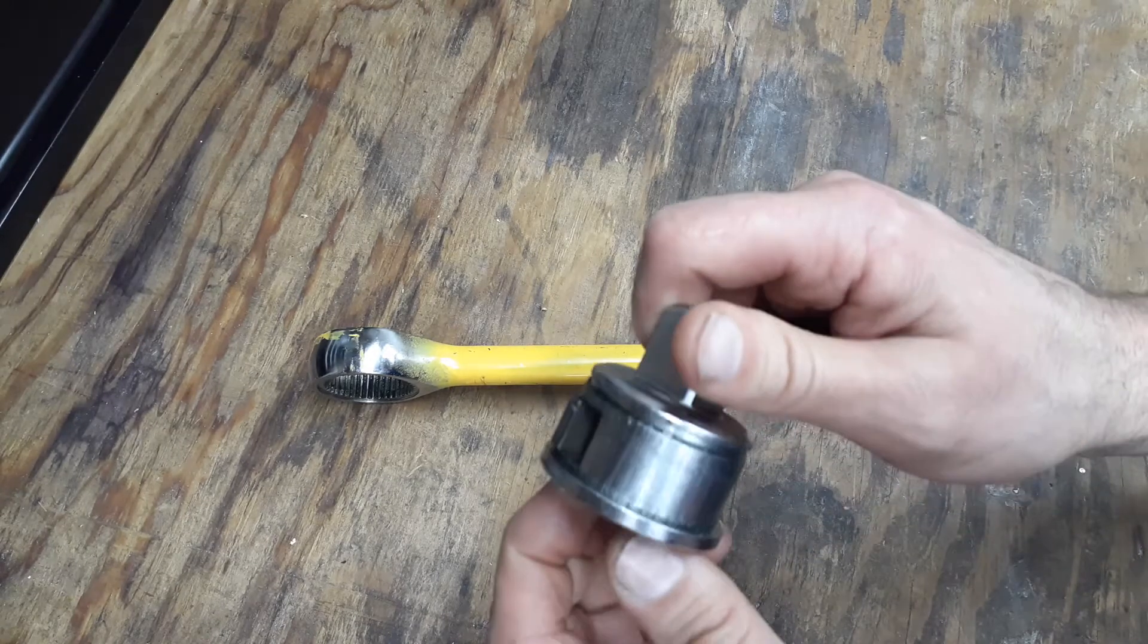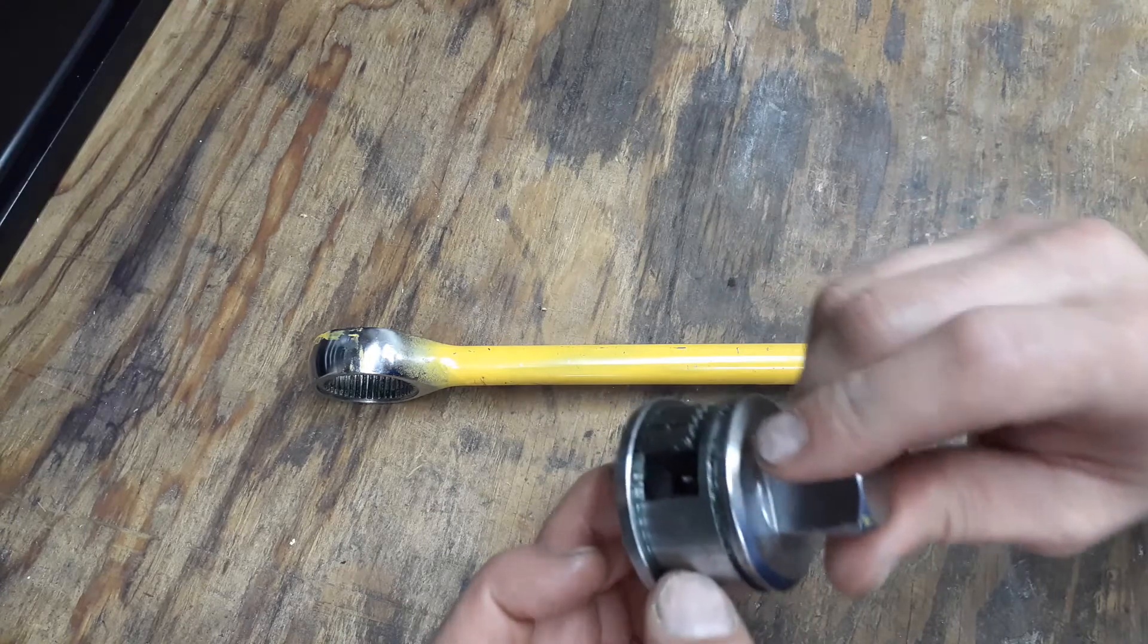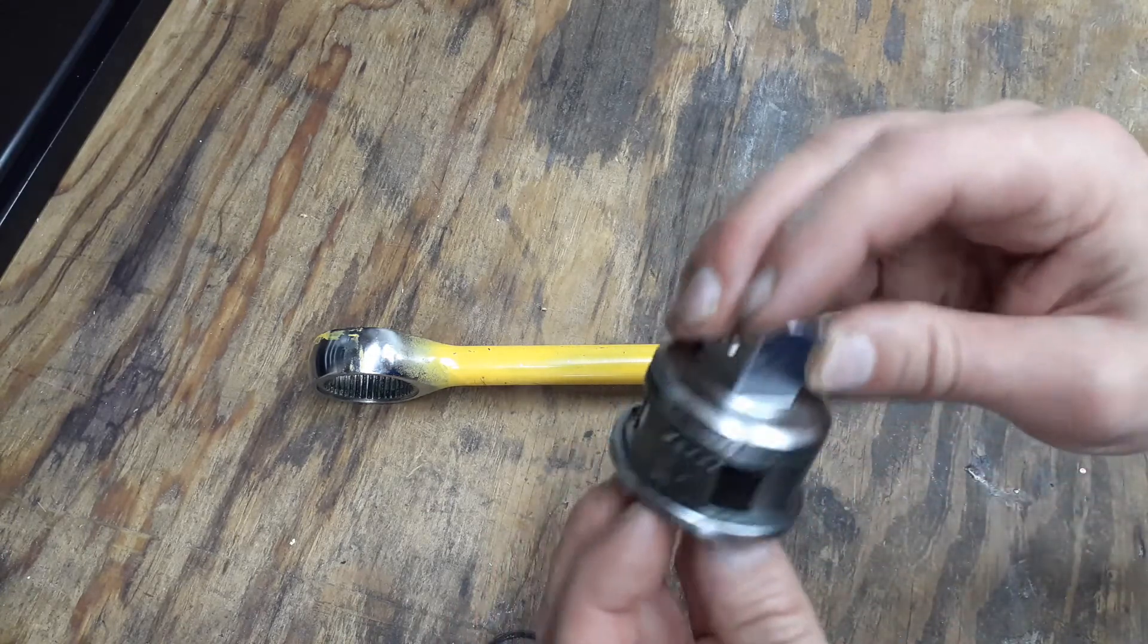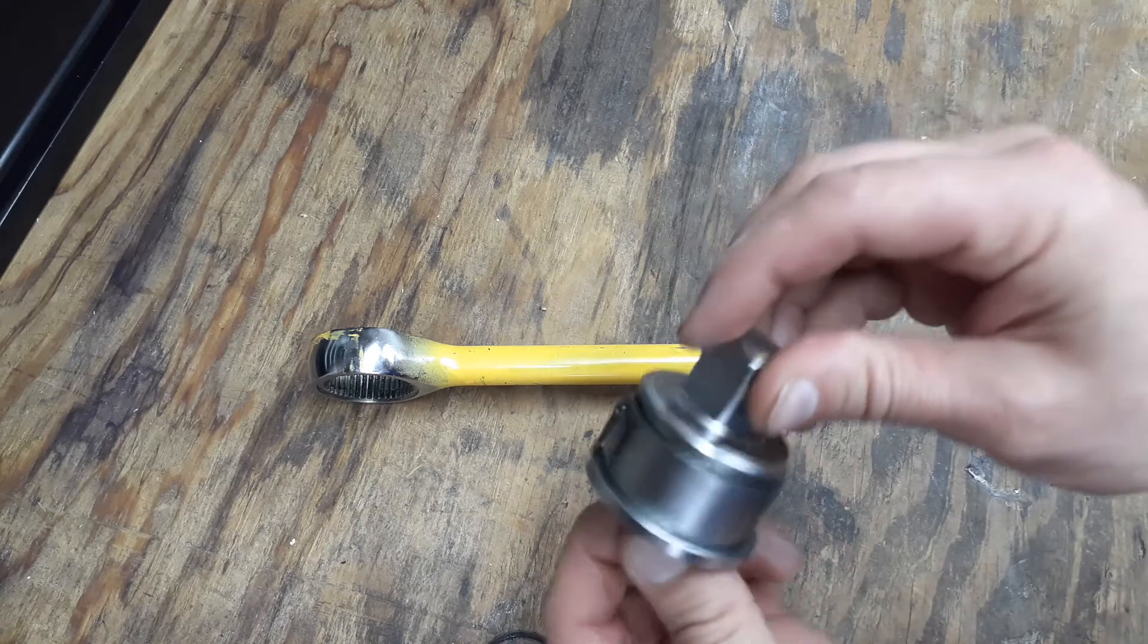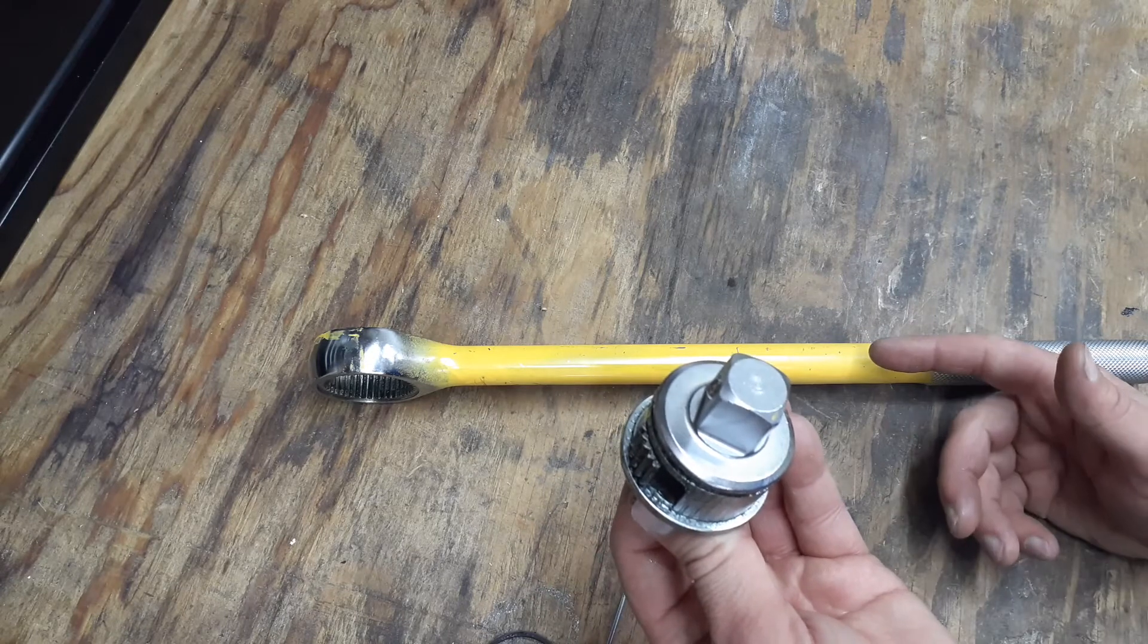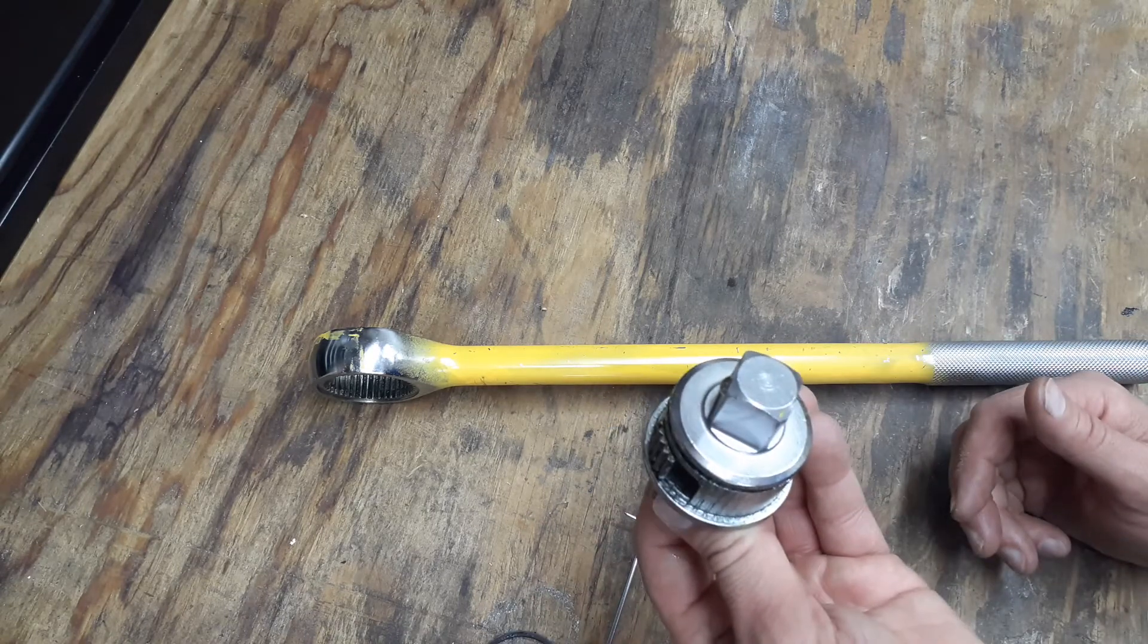I just wanted to show you the inside of this. Some of the SK ones have the double pawls, one on each side. This is just a single, like I said it's a cheapo ratchet, but it's Pittsburgh so it's lifetime guarantee. So you could take this back anytime, you know, you destroy it or rip it apart or whatnot.